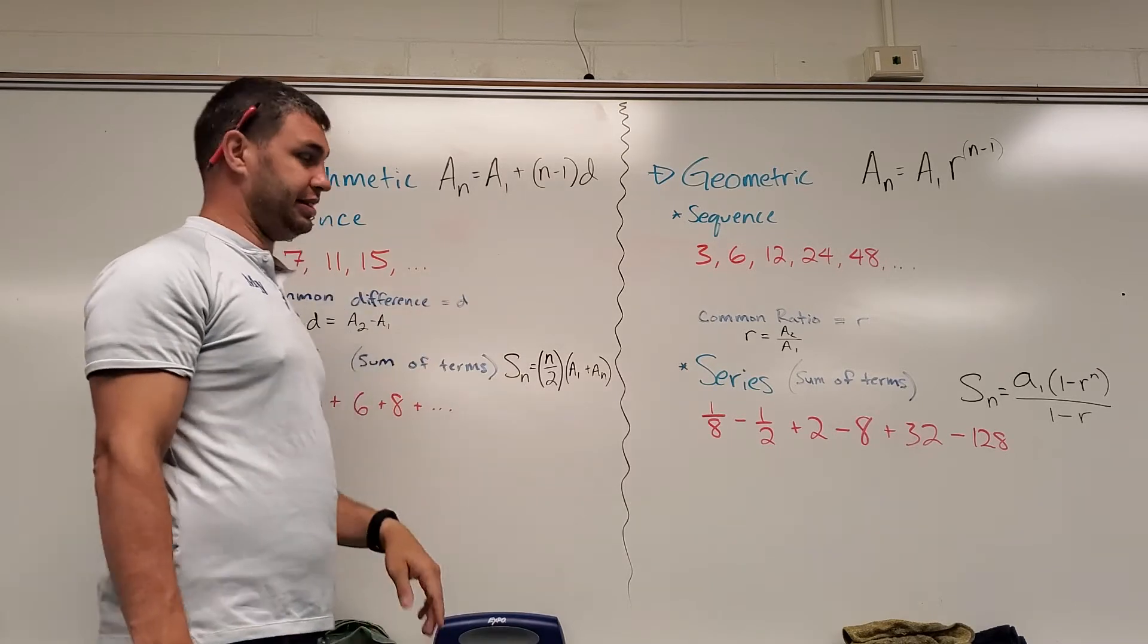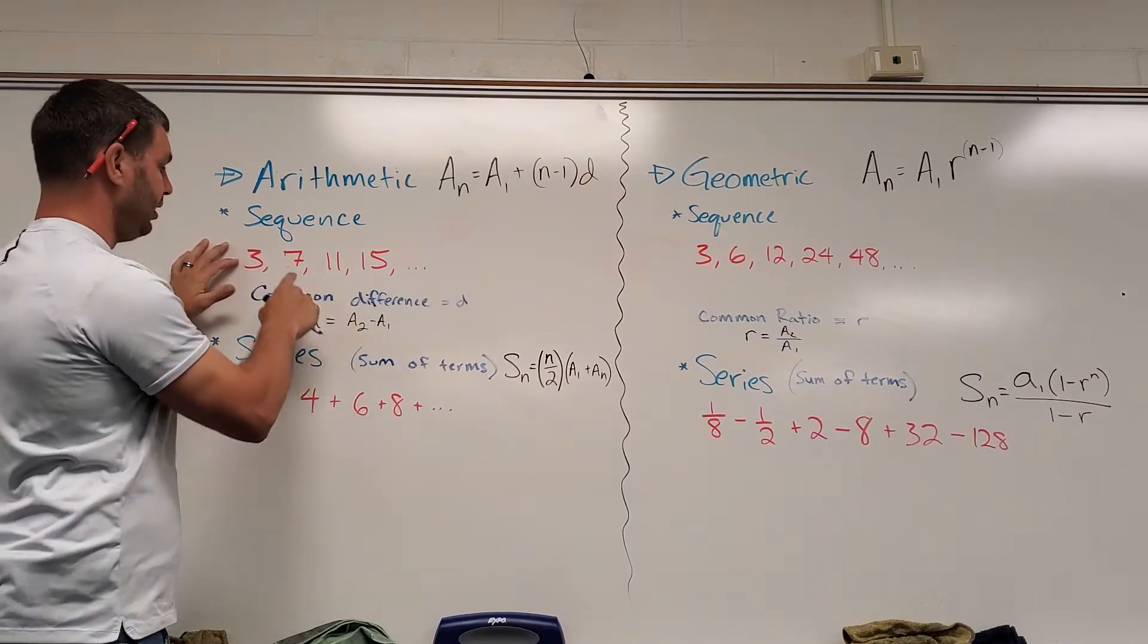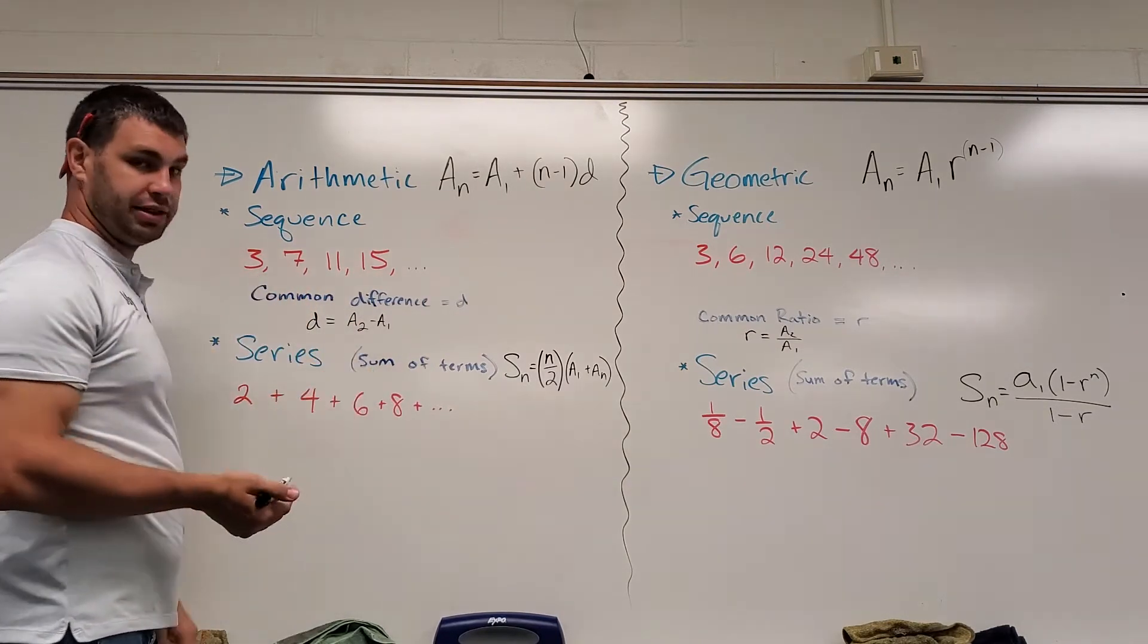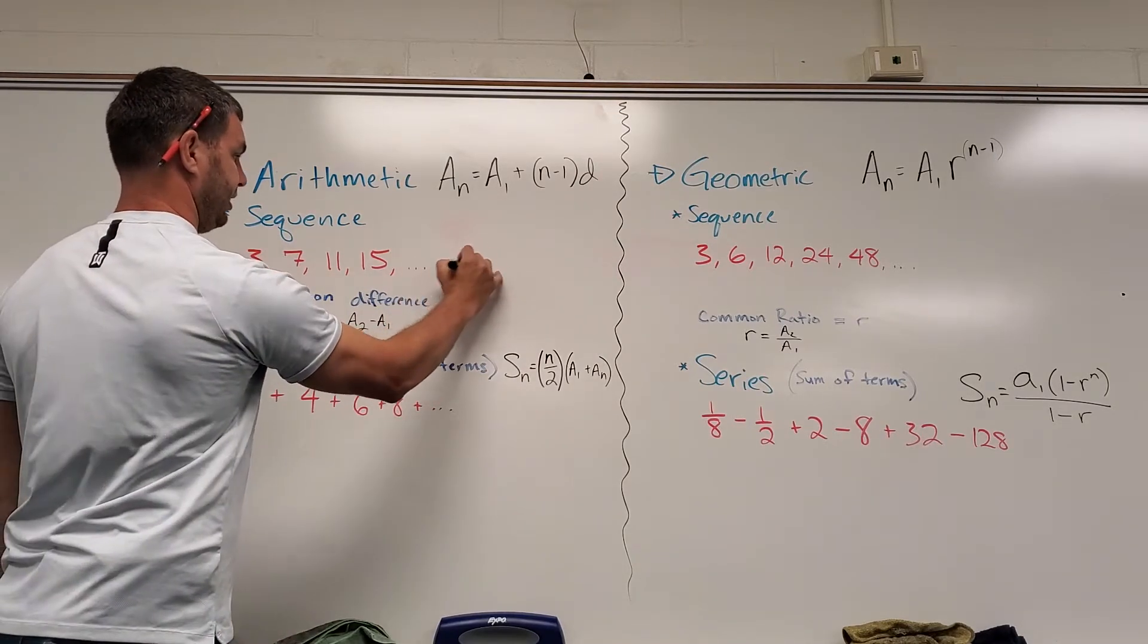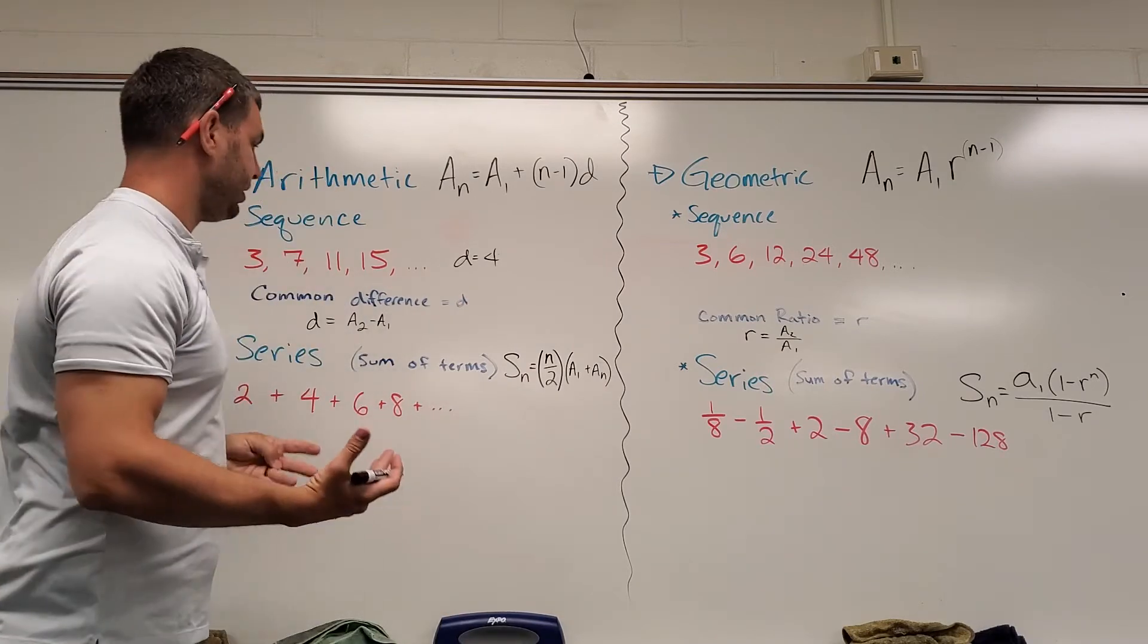Okay, so in this one, let's see if we can figure out what that D is. The difference is our second term minus our first term: 7 minus 3, of course, is 4. So the common difference here would be 4. You can plug it in and find some other things.